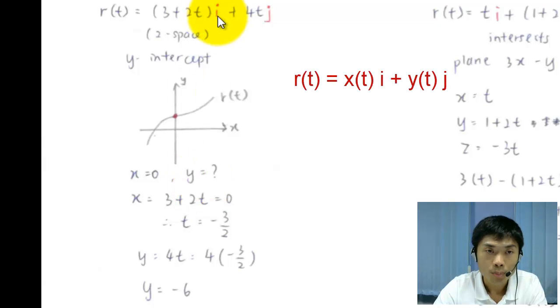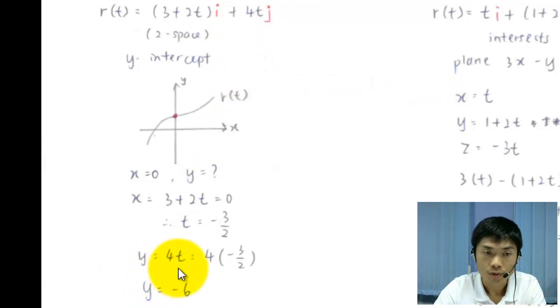So x equals 0. And what would be the value of y? You know that the component of i is actually for x. So you take x equals 3 plus 2t equals 0. And you find out the value of t, which is negative 3 divided by 2. And you substitute back to the y component. The y component here refers to 4t. So y equals 4t. And you end up with y equals negative 6. So negative 6 is the interception point at y.